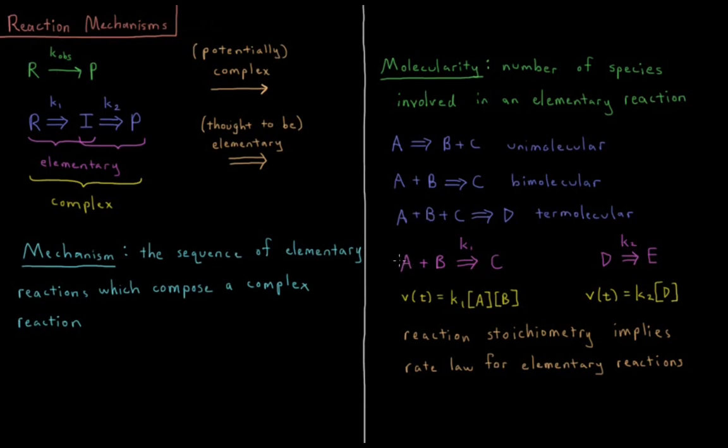Well, now we're in the lucky case where for elementary reactions, the stoichiometry does directly imply the rate law. So if I have A plus B going to C in an elementary reaction with rate constant K1, the rate of that reaction is equal to K1 times A to the 1 times B to the 1.